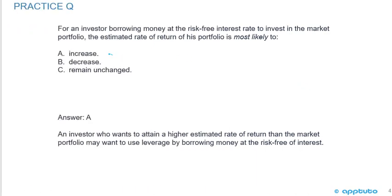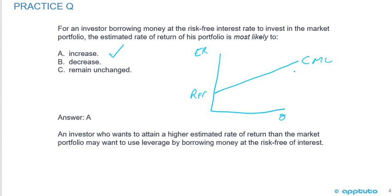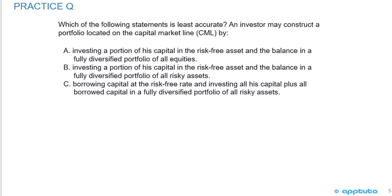The correct answer is A. An investor who wants to attain a higher estimated rate of return than the market may want to use leverage by borrowing money at the risk-free rate. Here we have our expected return, our risk, and the risk-free rate. We drew the capital market line tangent to the efficient frontier, with the market portfolio. The borrowing side is to the right; the lending portfolio to the left. The investor can borrow and invest in the market portfolio, creating leverage for a higher expected return but at higher expected risk.